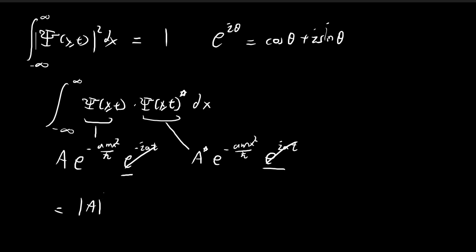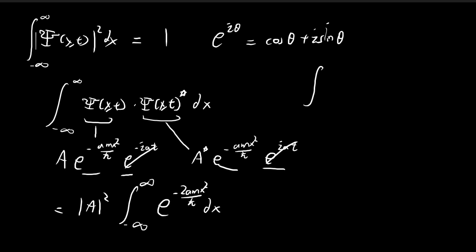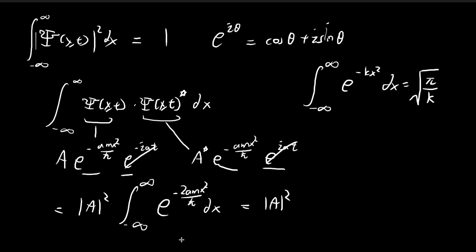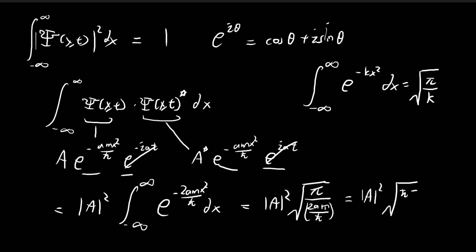Inside the integral we're left with the absolute value squared of the constant A, multiplied by the integral from negative infinity to positive infinity of e to the power of negative 2amx² divided by ℏ-bar, dx. This is a Gaussian integral — any integral of this form equals the square root of π over k. In this case, k is given by 2am divided by ℏ-bar.